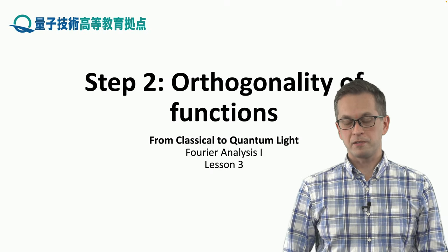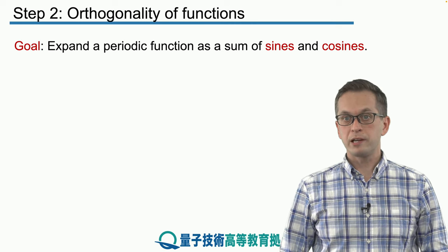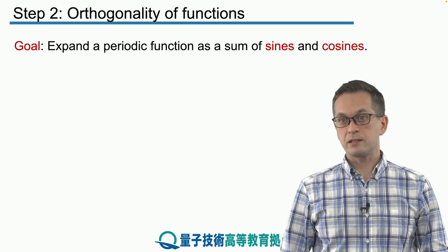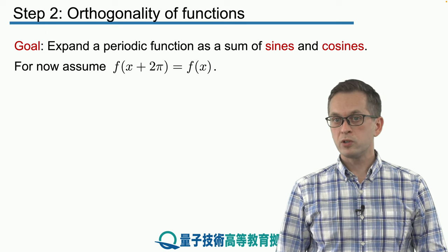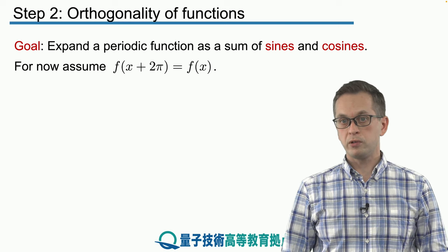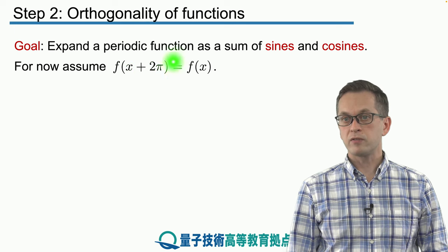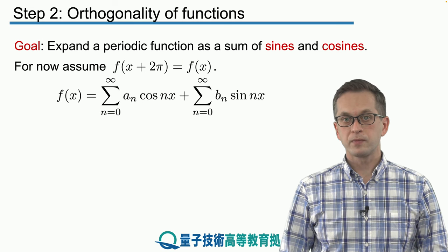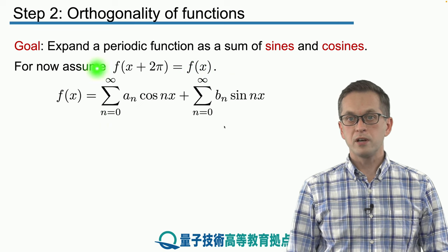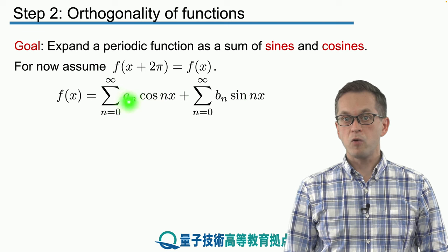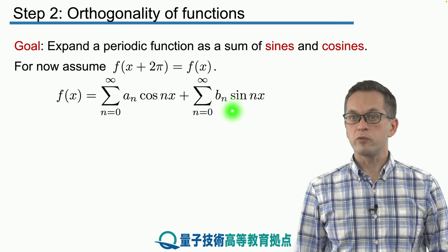Step two: orthogonality of functions. Let's repeat what our goal is in finding the Fourier series. We would like to take a periodic function and expand it in terms of its sines and cosines as a weighted sum. For now we're going to consider two-pi periodic functions, meaning if we add two pi to our spatial coordinate x we get the same function value f of x back. This is a general Fourier series: a sum over cosine nx weighted by coefficients an, and a sum of all the sine nx weighted by coefficients bn.